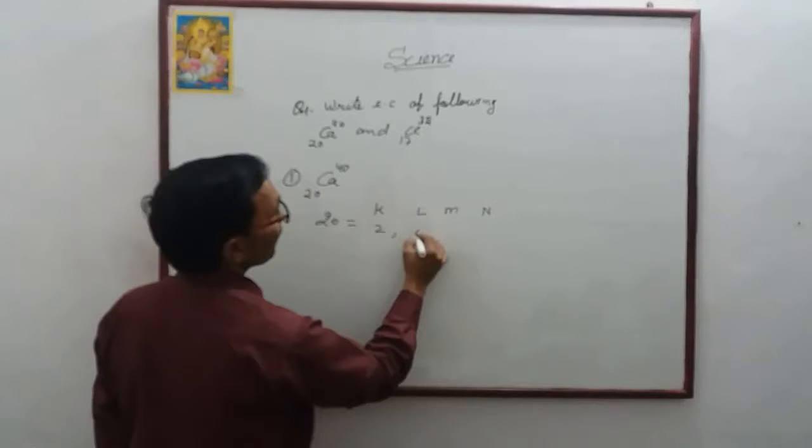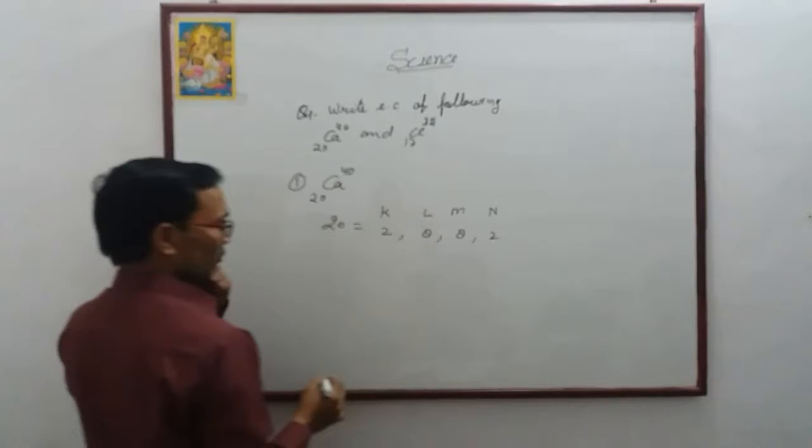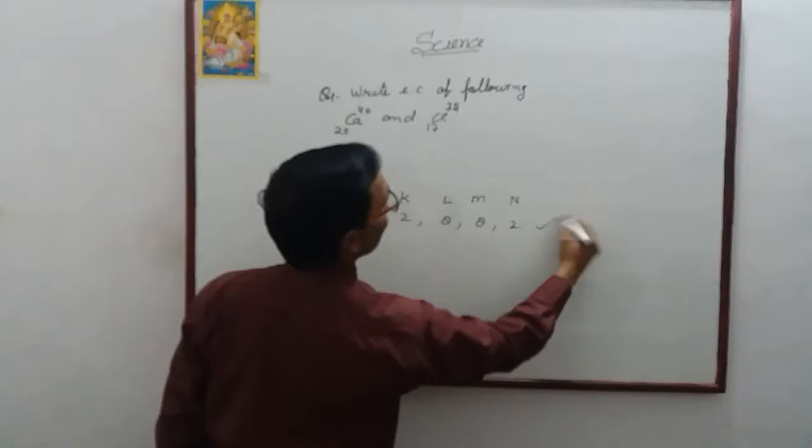2, 8, 8, and 2. How many electrons are there? 20. It is the correct electronic configuration of Calcium.